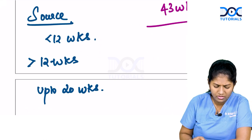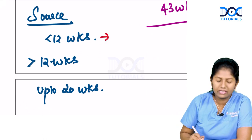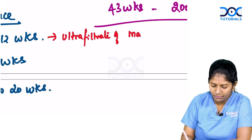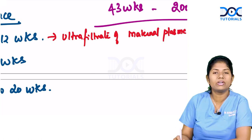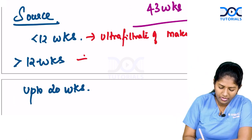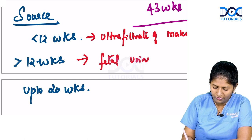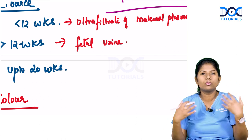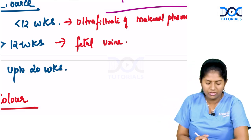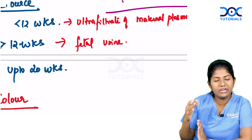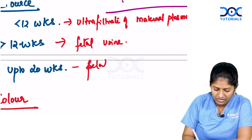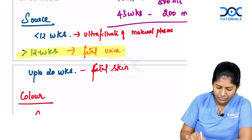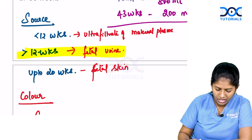The source of amniotic fluid: before 12 weeks, it is the ultrafiltrate of maternal plasma. After 12 weeks, the fetus starts urinating, so the main source becomes fetal urine. The fetal skin also contributes by diffusion of body fluids, but skin gets keratinized at 20 weeks, so fetal skin can contribute only up to 20 weeks. The overall main source of amniotic fluid is fetal urine.